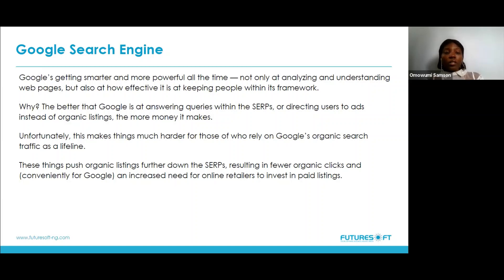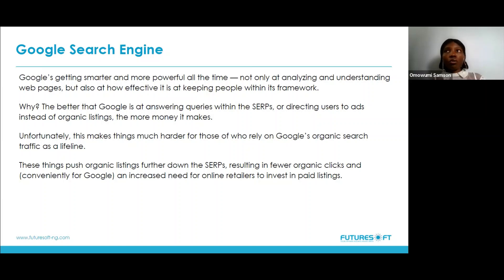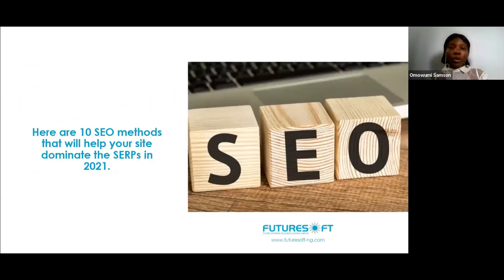The fact that Google is also trying to make money and answer search queries makes things very difficult for those who rely on organic search to find themselves on the first results page. That is why I decided to focus on the things you can do right to make sure you are visible on the first page of Google results. Here are the 10 SEO methods that will help your site dominate the SERP.